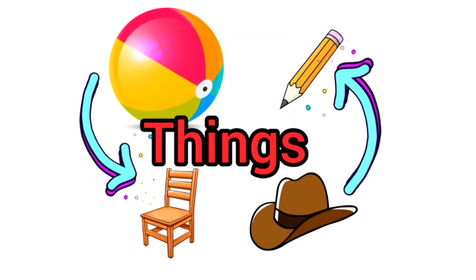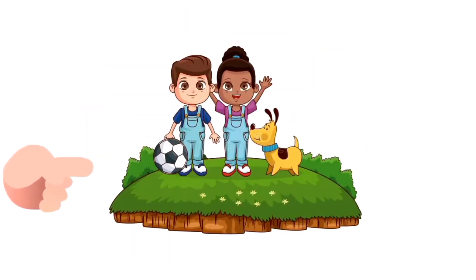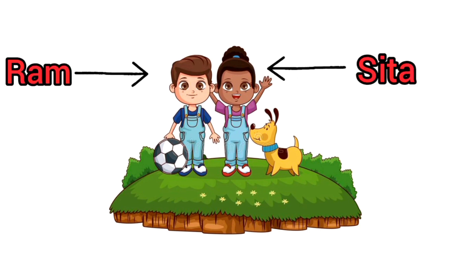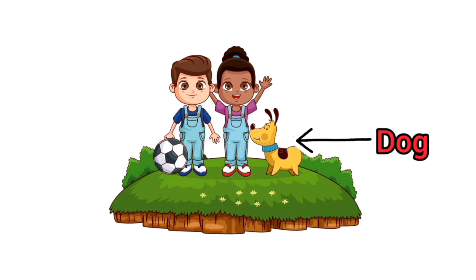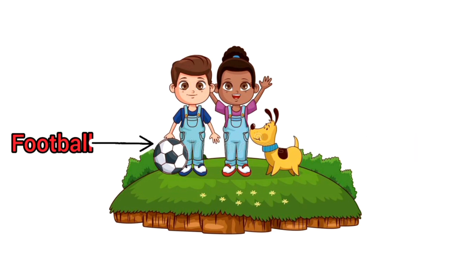Now children, look at this picture. Ram, Sita, and their dog are playing with a football in the garden. Here Ram and Sita are names of persons, garden is the name of a place, dog is the name of an animal, and football is the name of a thing.